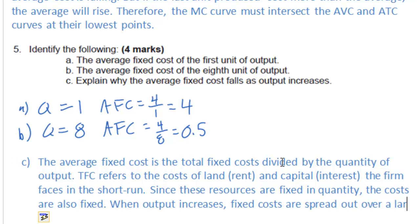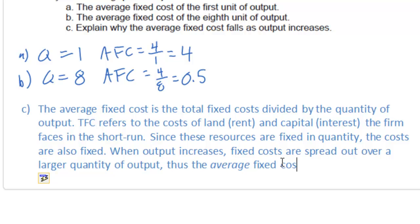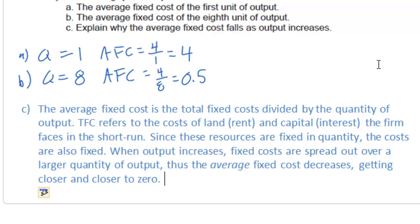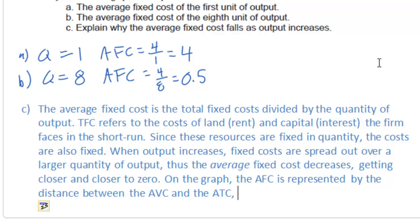In accounting this is referred to as spreading the overhead. Overhead costs are the costs of capital and land. The more a firm produces the lower the average or per unit fixed costs of production.